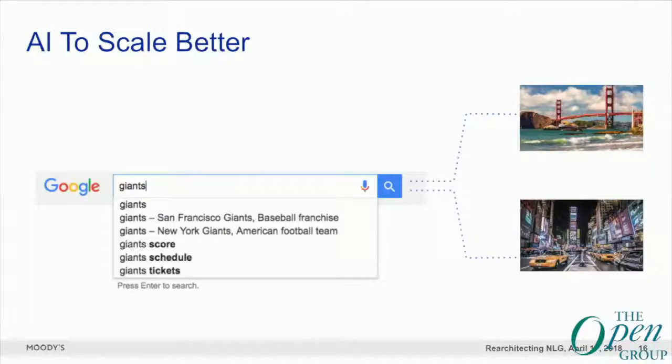How do we do that? We create a model and feed it — that's called training — with lots of inputs and lots of outputs to create the final program that will solve our problem. To give you an example, we can think of Google Search. In the US, the Giants are both a baseball team in San Francisco and an American football team in New York.